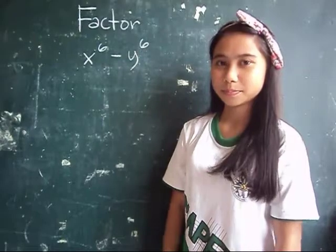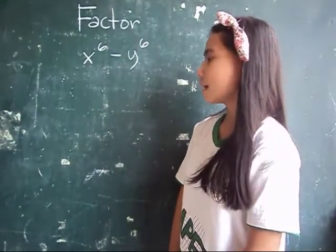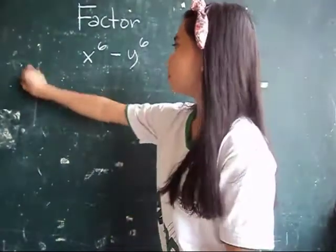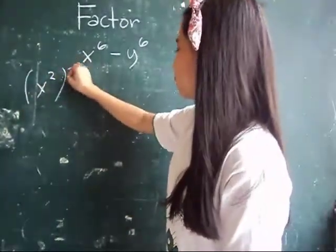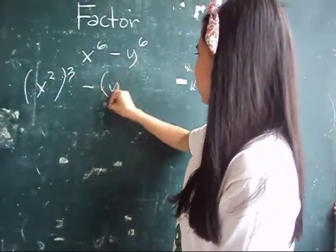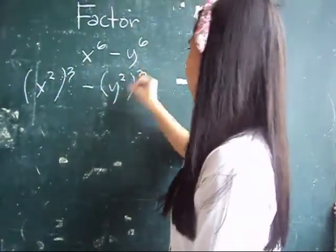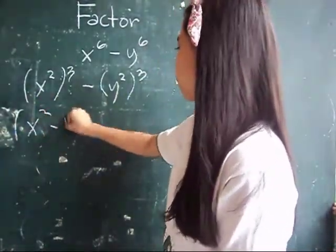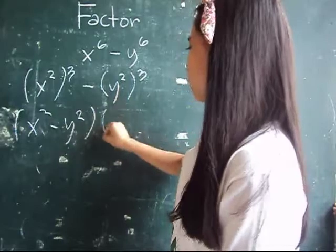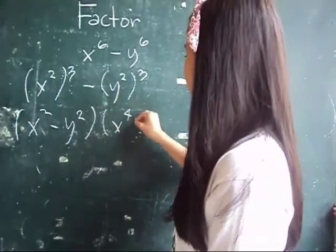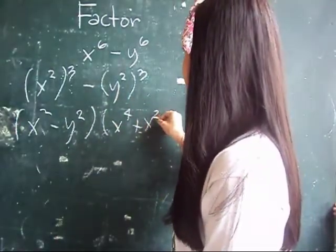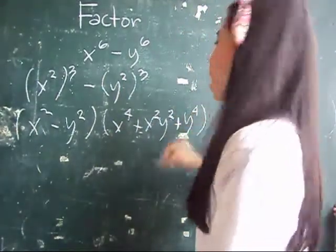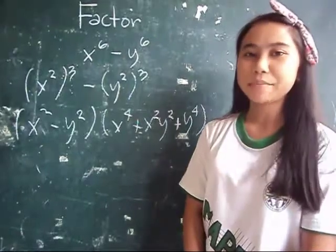Factor x to the power of 6 minus y to the power of 6. Write this in the form difference of two cubes. The factors are... But we can still factor x squared minus y squared.